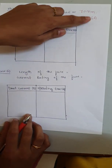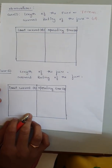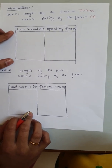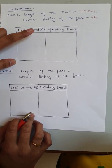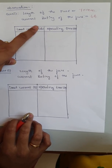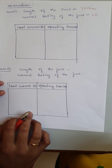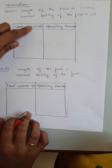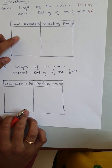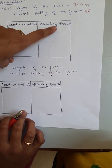Up to 6 amperes, the fuse will not melt. Above that, if you supply current, melting will take place. In the tabular column, we take two columns: load current and operating time, since the aim is to plot the graph of load current versus operating time. We take 5 to 6 readings to see how load current relates to time.